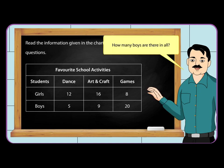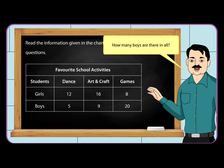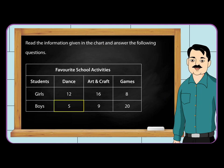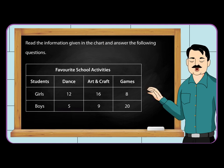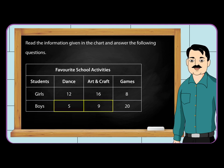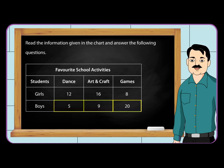How many boys are there in all? Boys who like dance is equal to 5. Boys who like art and craft is equal to 9. Boys who like games is equal to 20.